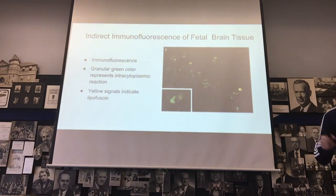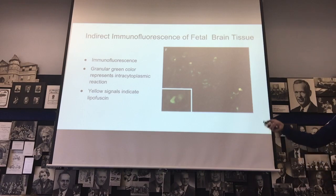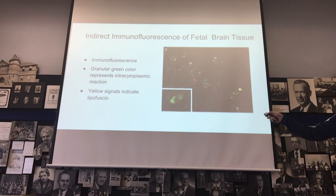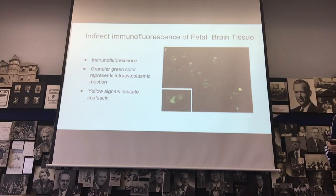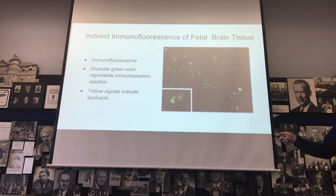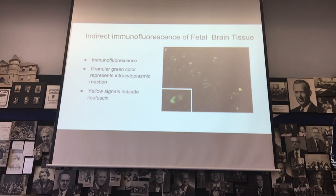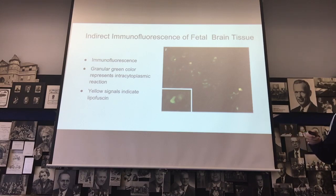The next thing they did was an indirect immunofluorescence of the fetal brain tissue. The green granular color indicates an intracytoplasmic reaction, meaning a reaction is going on inside the cell, not outside. Yellow signals indicate lipofuscin, which is associated with neurodegenerative diseases like Alzheimer's and Parkinson's. The basic takeaway is that something is going on inside the cells that is causing those deformities seen in the previous slide.